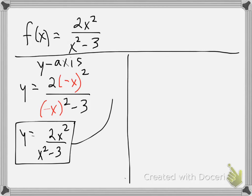Is this the same function that we started with? The answer is yes. We plugged in negative x, the negative gets absorbed by the squares, and we end up right back where we started with 2x squared over x squared minus 3. So we do have y-axis symmetry, but we need to check for origin symmetry as well.